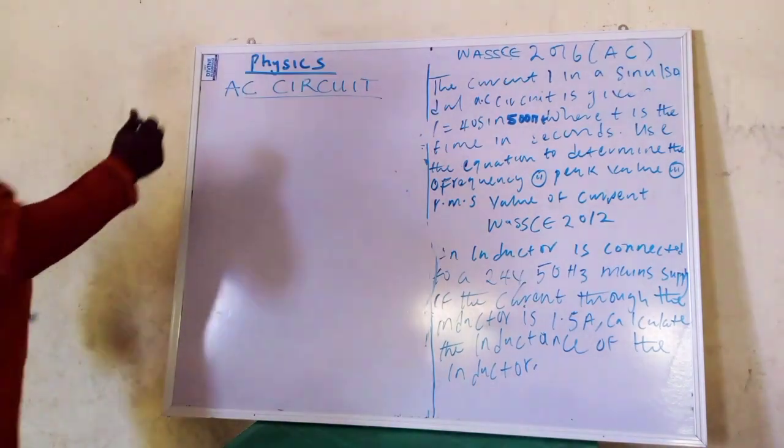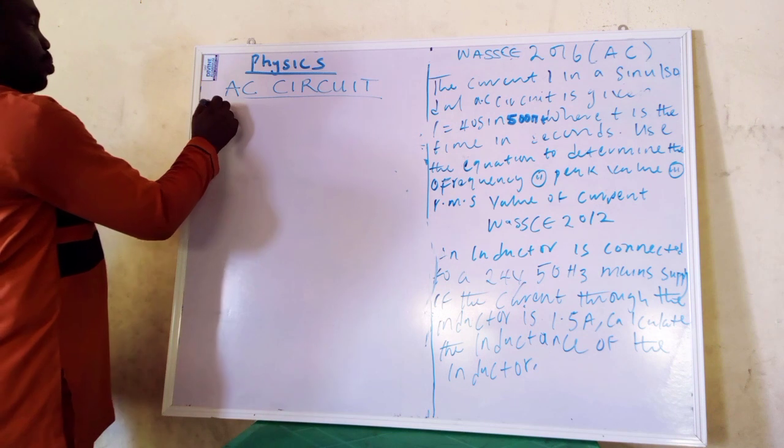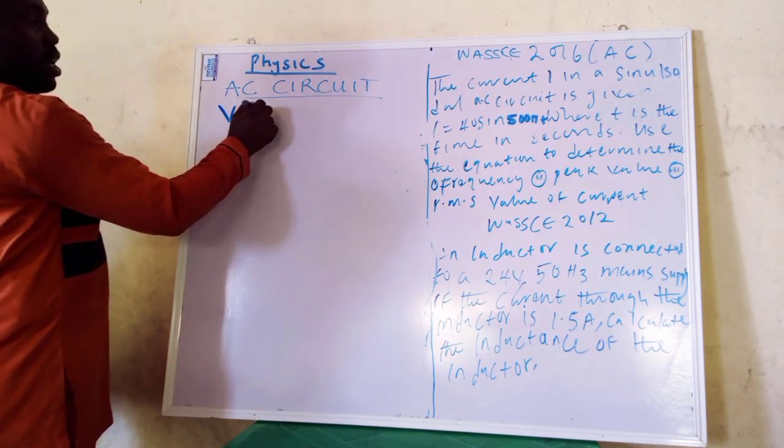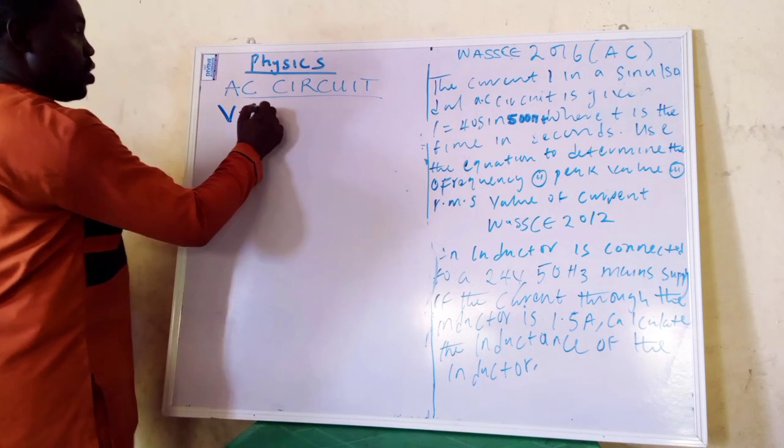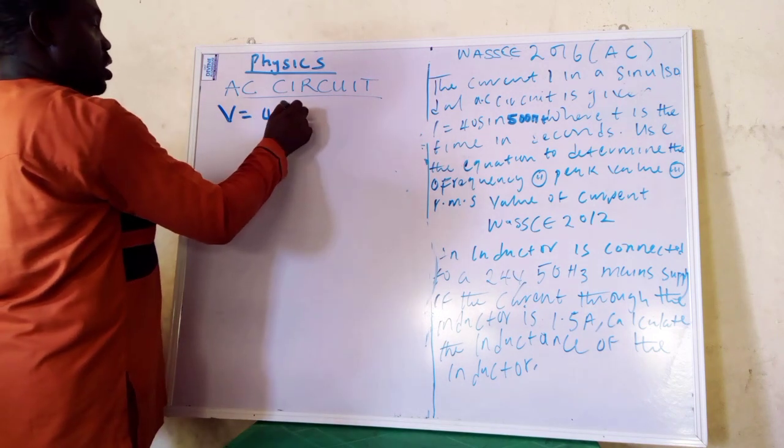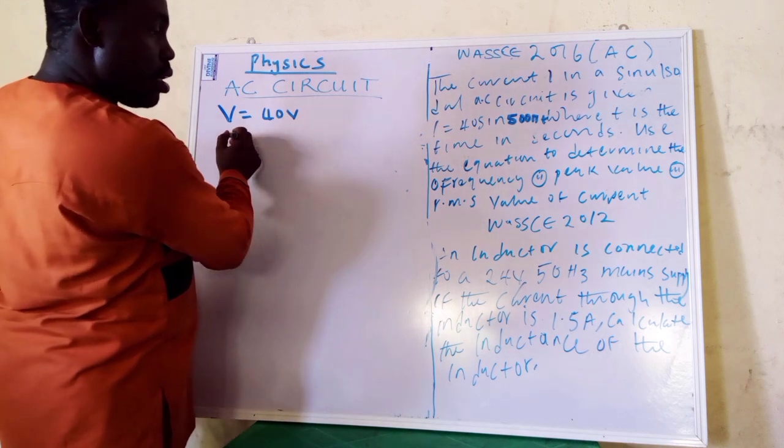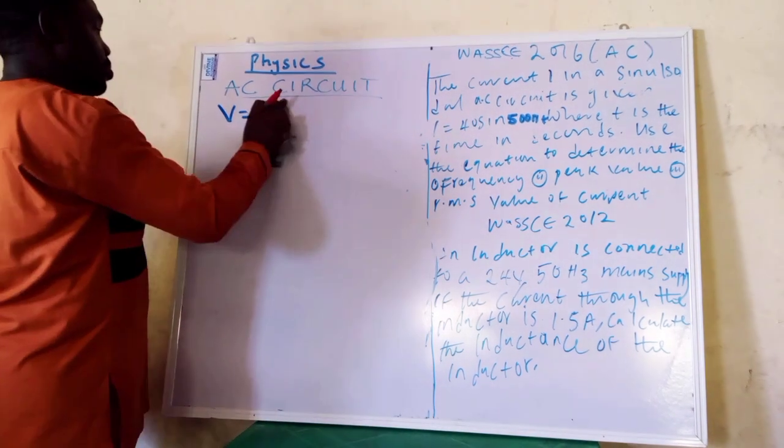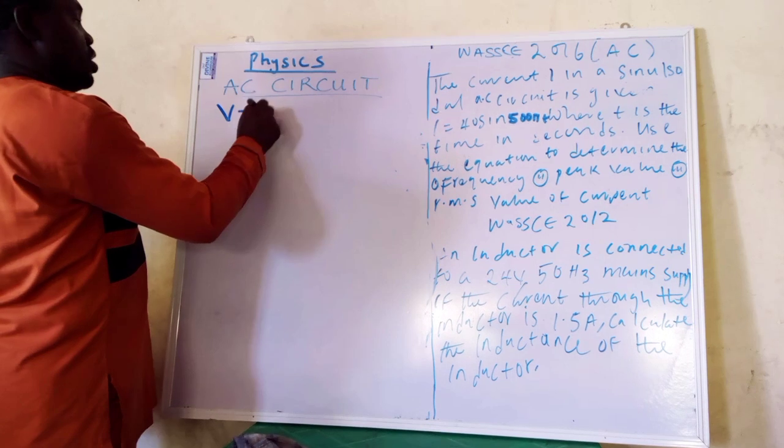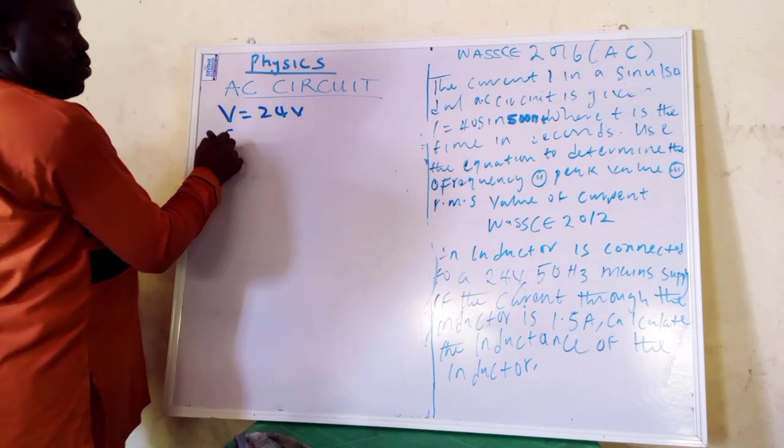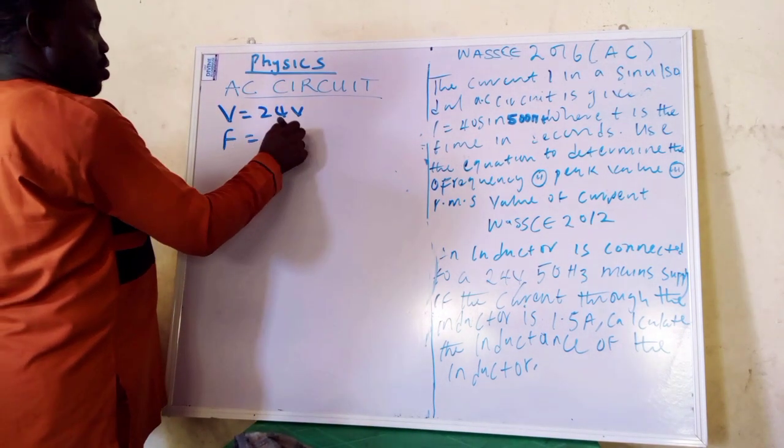Now, find out what were you given? What are the parameters given? Please, let's check out parameters. Voltage is what? 40... Oh, sorry. Okay, 24 volts. Okay, next. 50 Hz.